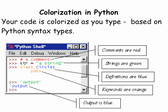Code in Python is colorized as you type it based upon Python's syntax types. Comments are in red. String literals are in green. Definitions are in blue. Keywords are in orange. And output is blue.